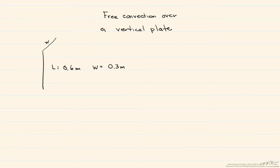Let's consider a vertical plate that is 0.6 meters high and has a width of 0.3 meters. When we talk about the width, we mean this into the paper. The surface temperature is 90 degrees C, and it's surrounded by quiescent air at 25 degrees C. We want to find the heat transfer from the plate.